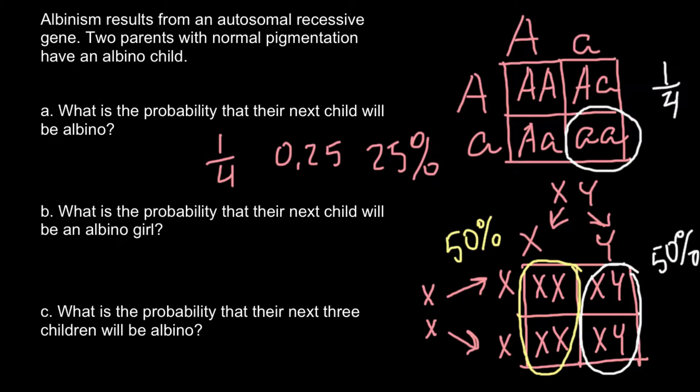So in order to answer this question, we have to multiply these two independent events. The first would be the probability to have an affected child, and as we found earlier, the probability is 1 fourth. And the probability for the child to be a girl would be 1 half. So we have to multiply these two independent probabilities, and the answer would be 1 eighth. You can also give the answer as a decimal number by dividing 1 by 8.